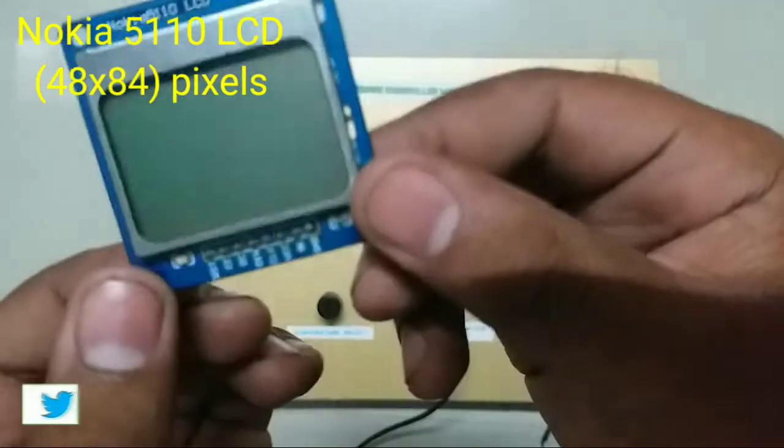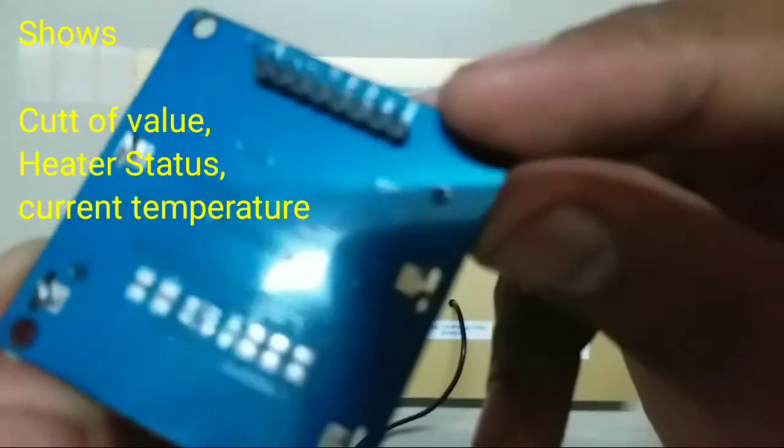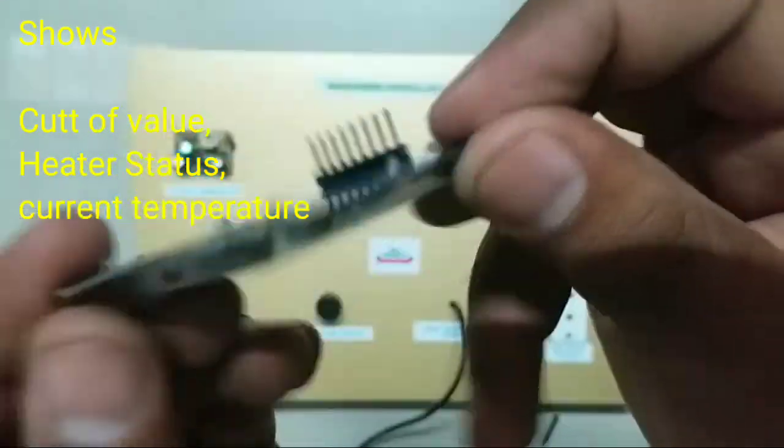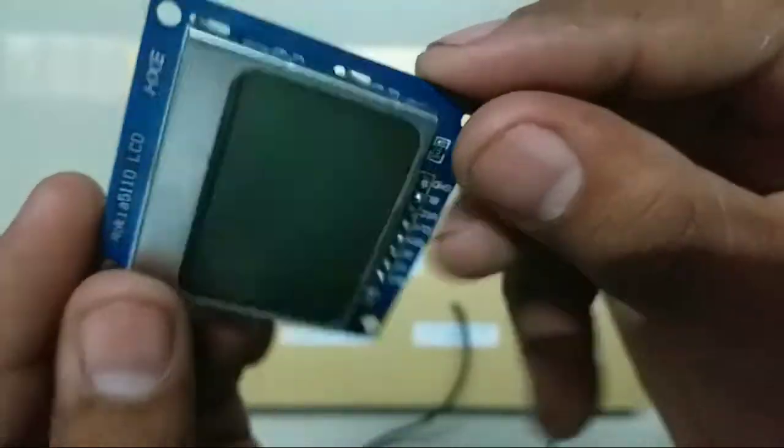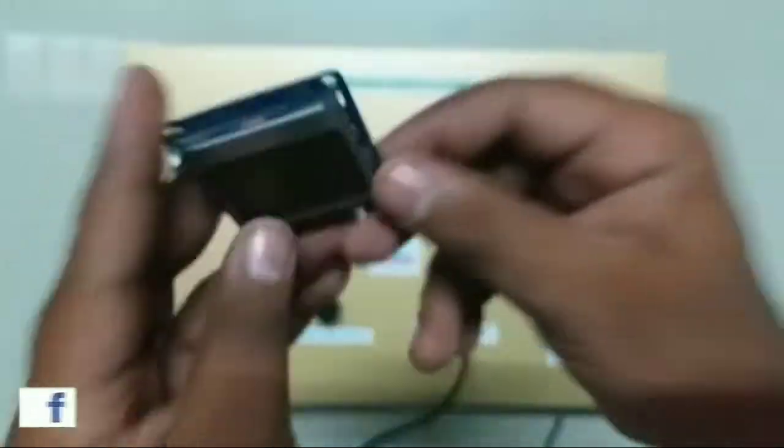To show the different parameters like Temperature, Cutoff Value, Heater On/Off status, we will use Nokia 5110 LCD which is removable, as you can see.